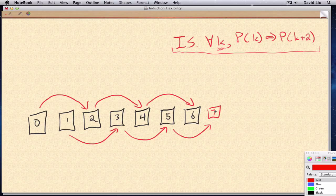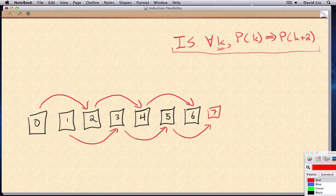And the key point that I want to make here is that this induction step, this proof that for all k, p of k implies p of k plus two, that can happen independently of the base case. These red arrows here, they can happen independently of where we start.